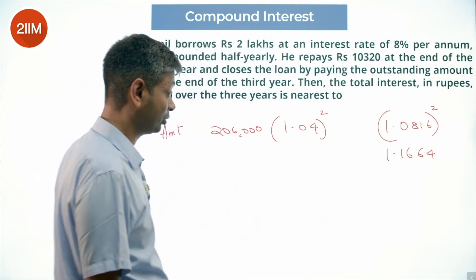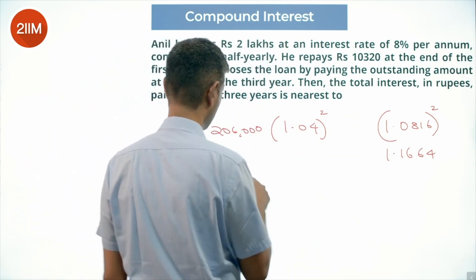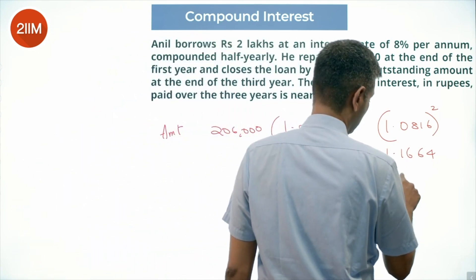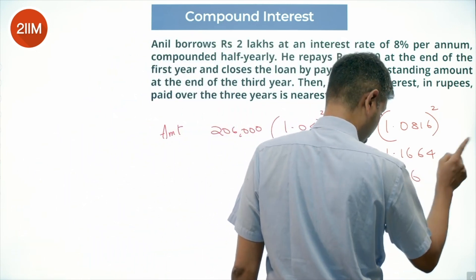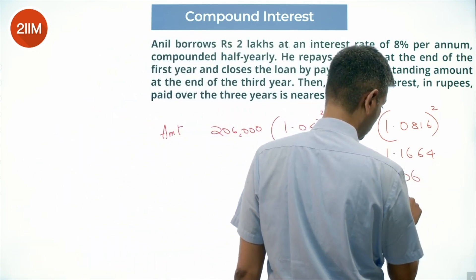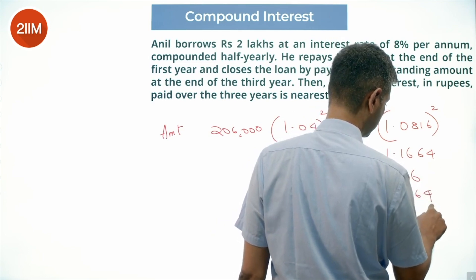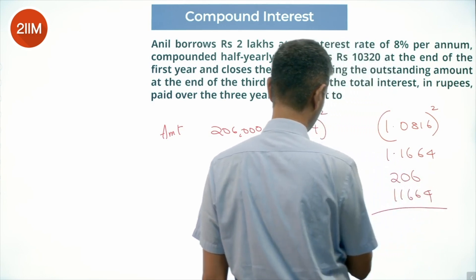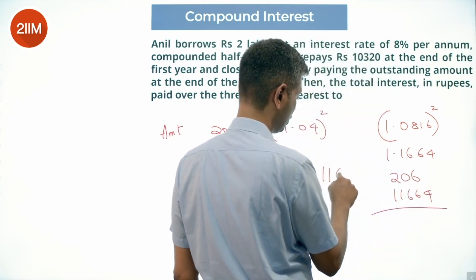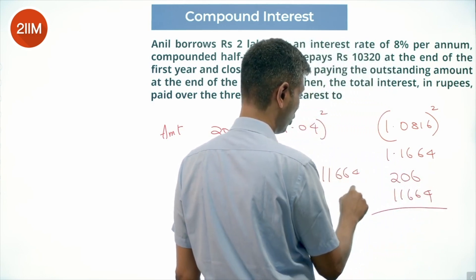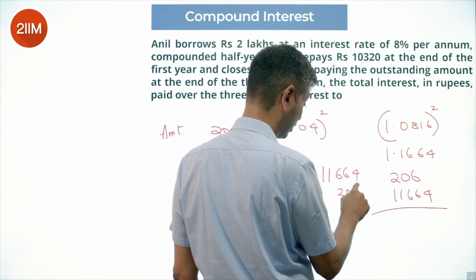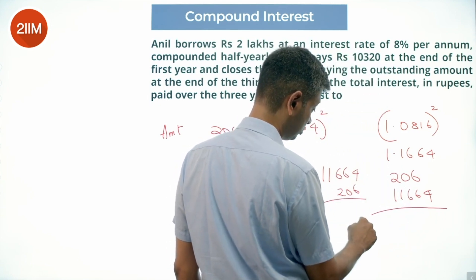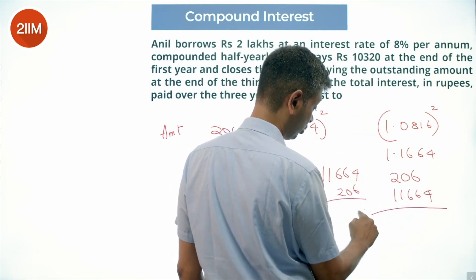So 1.1664 into 206,000 — I am going to brute force this: 206,000 multiplied by 11,664. I know you guys have a calculator, but sometimes we brutalize things.